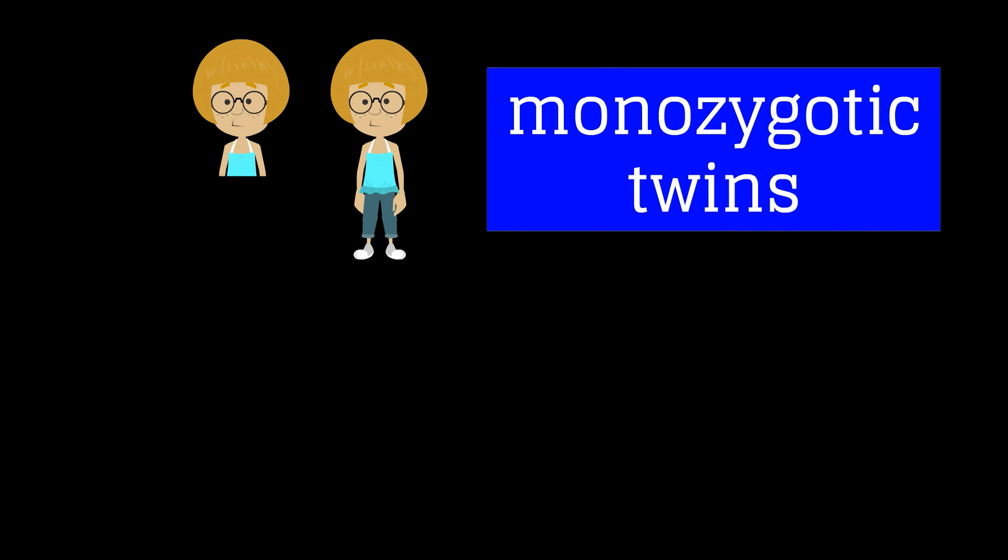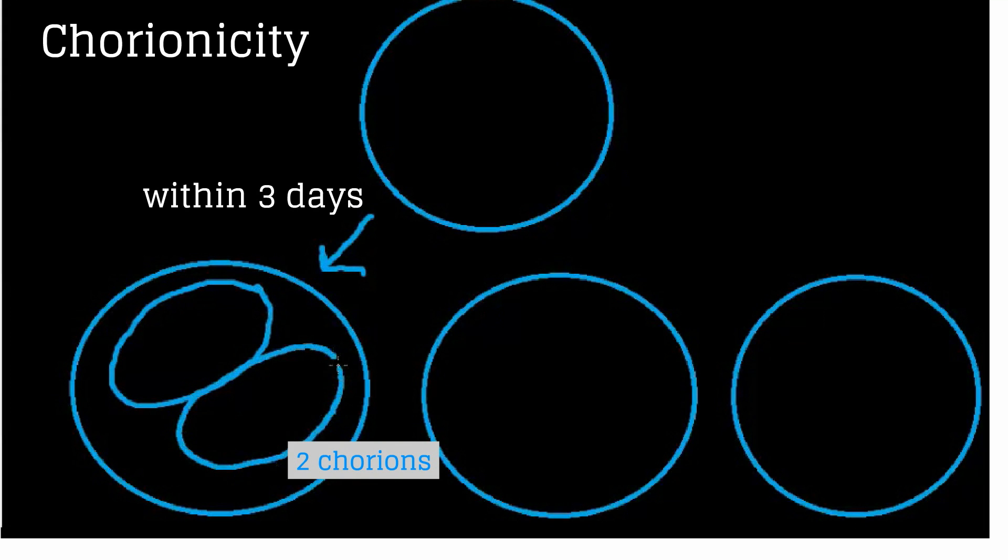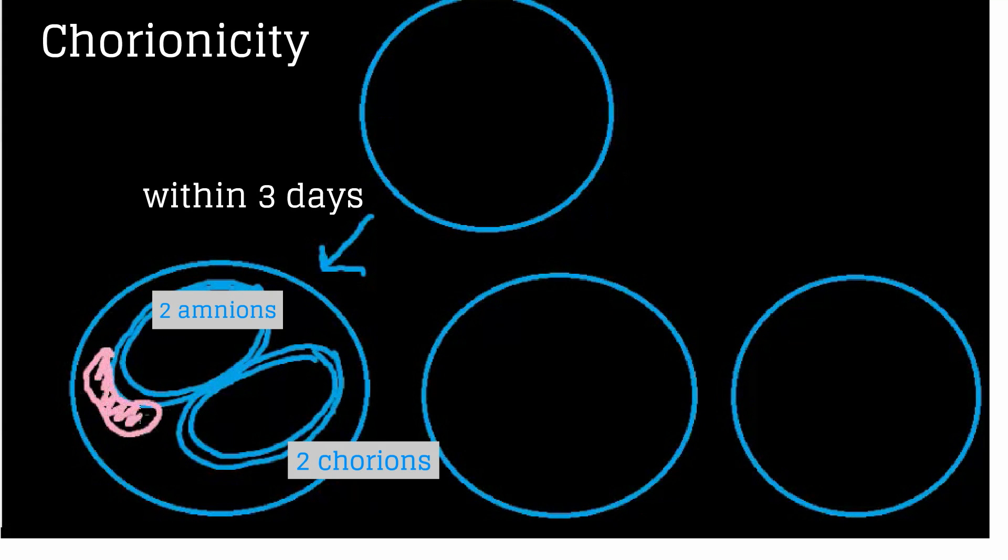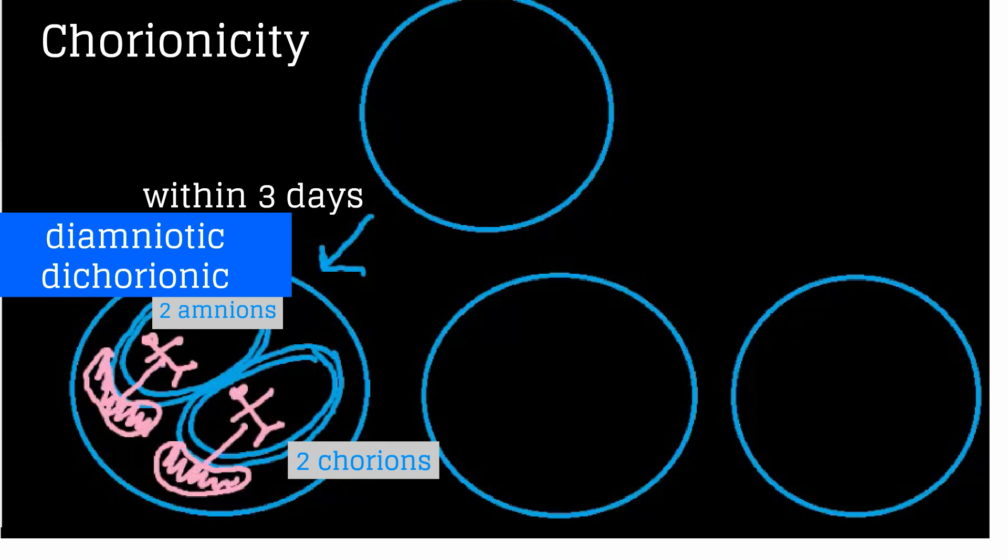Monozygotic twins, otherwise known as identical twins, result when a fertilized ovum divides after conception. The timing of when this divide occurs will decide the chorionicity. If division occurs within the first three days after fertilization, there will be two chorions, two amnions, two placentas, and here are the fetuses. These will be diamniotic, dichorionic twins.